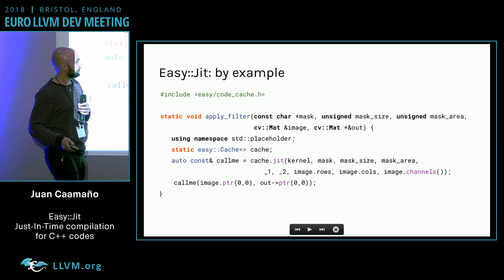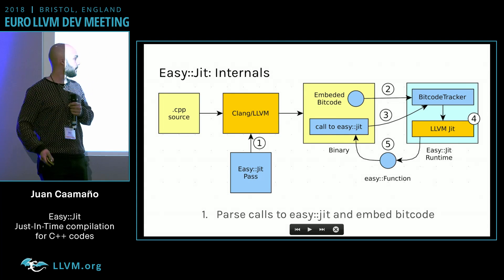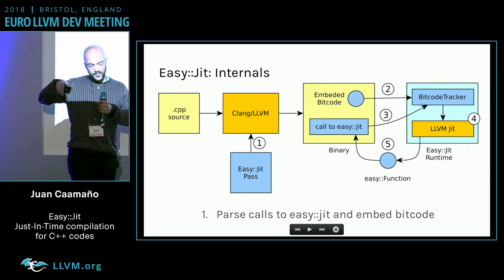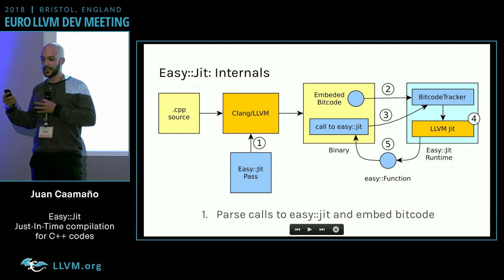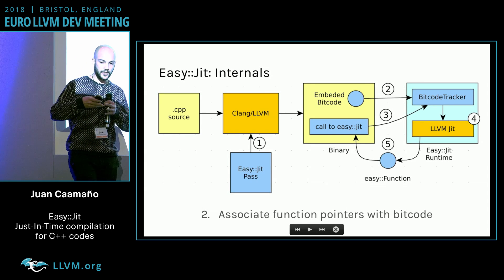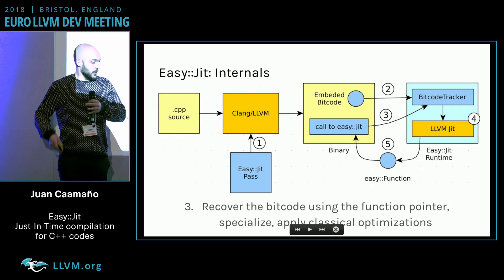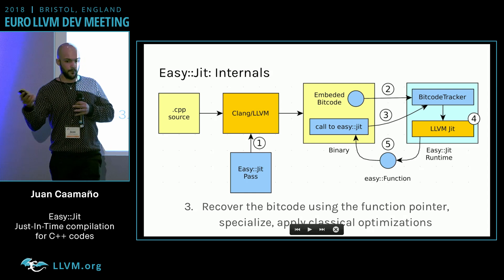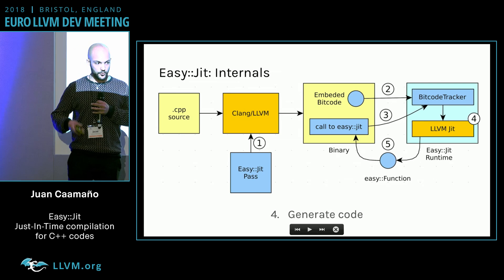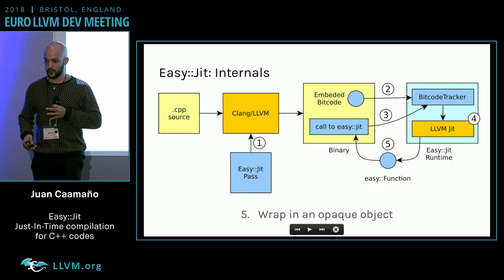How does the library work? It needs a little bit of help from the compiler. We have a small compiler plugin that parses calls to EasyJIT and deduces which functions need to expose their bitcode at runtime. At program start, we associate the bitcode for each function with a function pointer. When EasyJIT is called, we recover the bitcode using that pointer, perform the optimizations mentioned, generate code using the LLVM just-in-time compiler, and wrap everything in an object for the user.